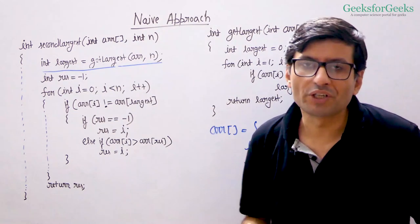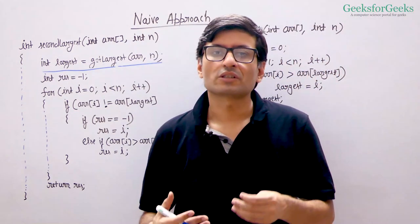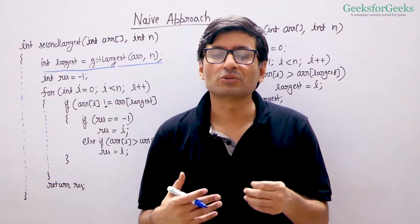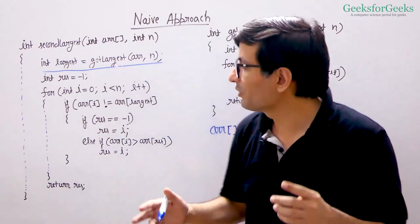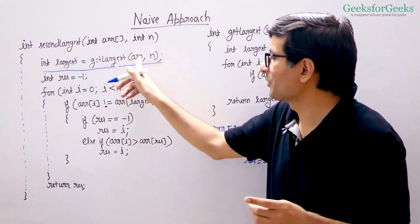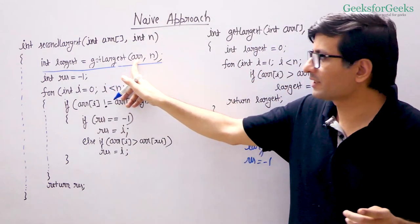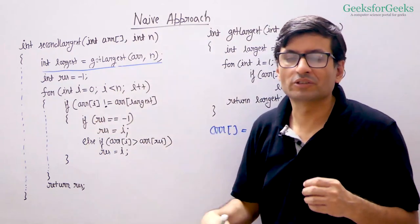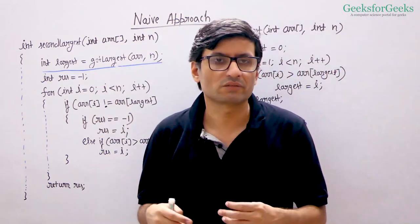Now please pause this video and think of an approach that finds the second largest using only one traversal of the array. Here we are doing two traversals — once to find the largest and then one more traversal. Try to find the second largest using just one traversal.